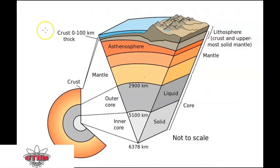They are solid, but they can move. Because of this property of the asthenosphere, convection currents can be formed. The convection currents are responsible for the movement of the plates, which is known as plate tectonics.